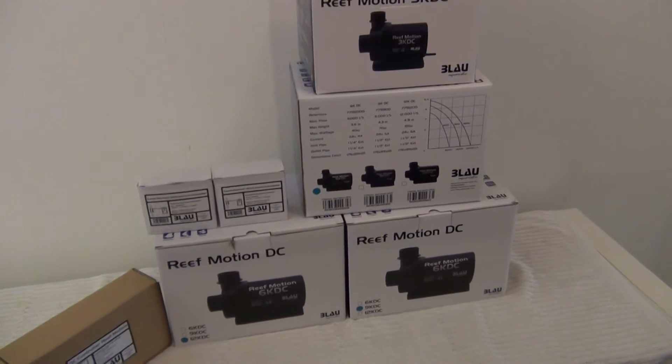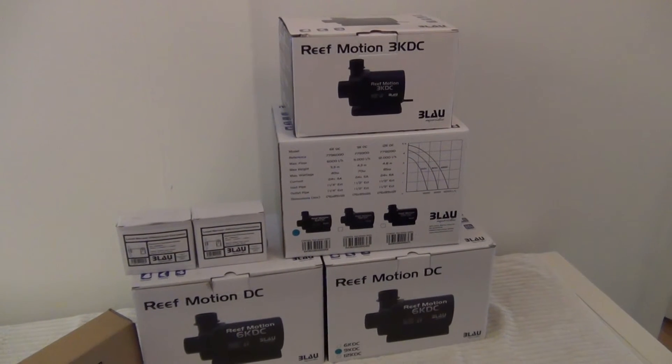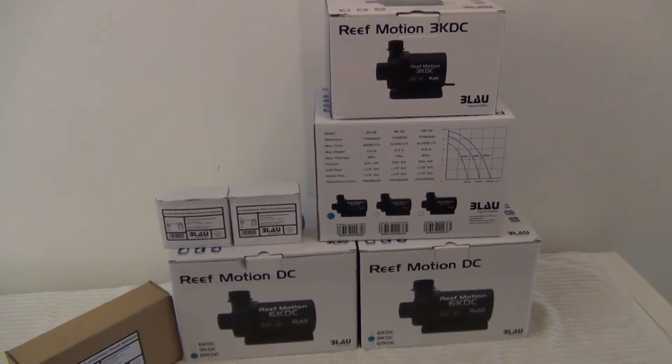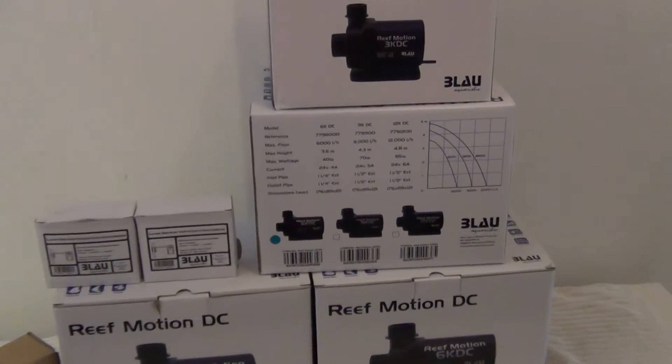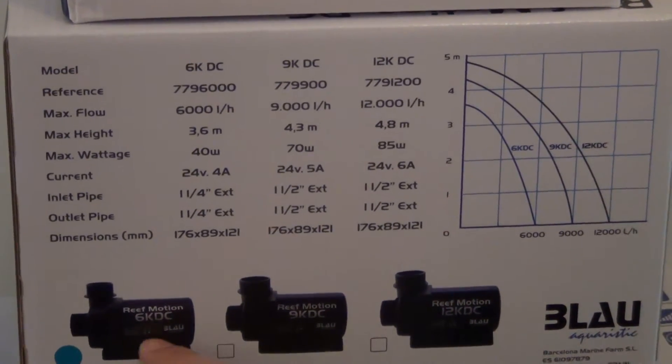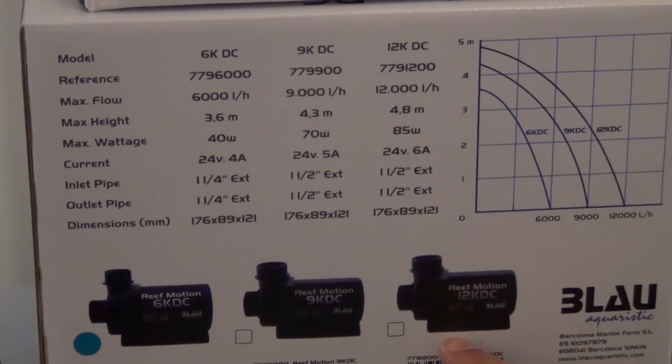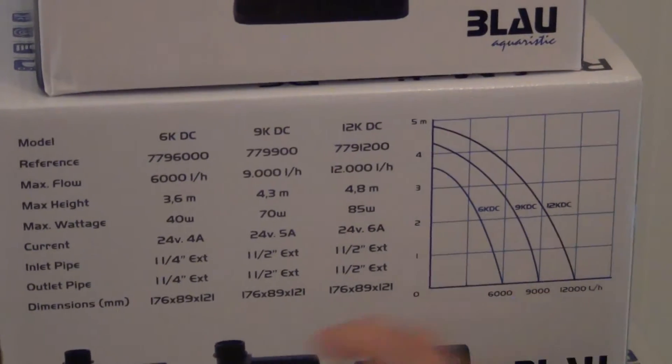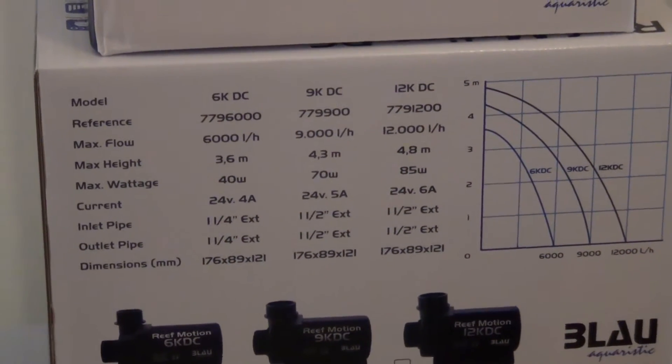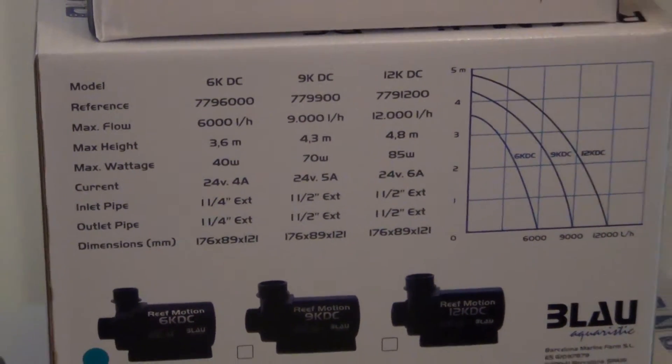I just want to quickly show you the different stats of the pumps: dimensions, head heights, wattage, etc. And as you can see, the three big pumps - the 6K, 9K and 12K - are virtually identical. It's just the different head heights and the wattage that's different.